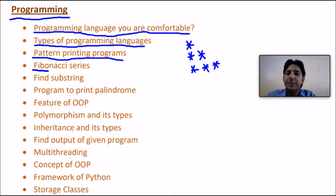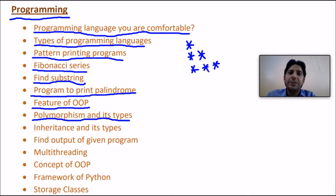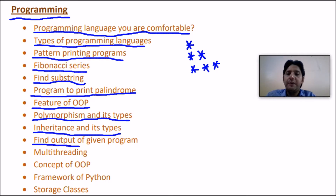They may ask about the Fibonacci series or finding a substring — given a string, you have to find a substring. Also, programs to print palindrome numbers, features of OOP (abstraction, polymorphism, inheritance, encapsulation), polymorphism and its types (static with overloading, dynamic with overriding), and inheritance and its types (single, multiple, multi-level, hierarchical). They may give you a program and ask you to find its output, and also ask about multi-threading.